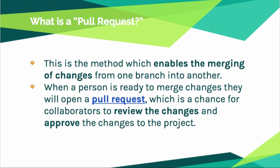A pull request is something that enables the merging of changes from one branch to another. We just talked about branches where you take a version of the files, work on them, and then put them back in. When you want to put them back into the main project, you do what is called a pull request. A pull request gives everybody a chance to review the changes, approve them, and then merge them back into the main project.